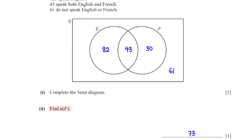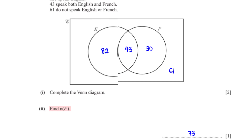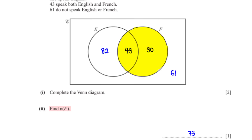Find n(F). We are finding the number of people who speak French. This is 43 plus 30, which equals 73.